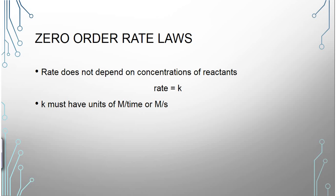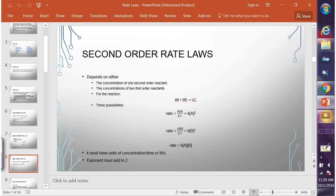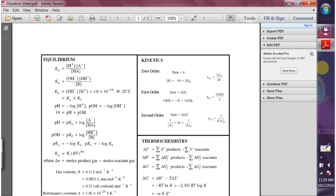For a zero order reaction, the concentration does not matter — the reaction will have the same rate no matter what. So the rate is just equal to the rate constant K. Because of that, your K is going to have the same units as your rate: molarity per second. On the equation sheet you can see: rate equals K, rate equals k[A], rate equals k[A]^2. The units are molarity per second for zero order, one over time for first order, and one over molarity times time for second order — just to make sure your rate ends up in the right units.